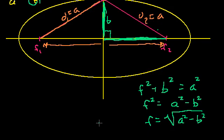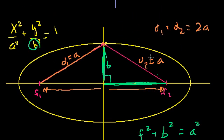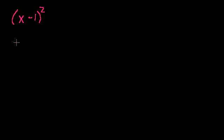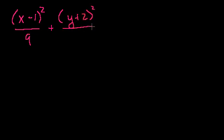That's neat and clean — you just take the difference of these two numbers and take the square root to get the focal distance. Now let's apply this to a real problem. Suppose we're given the equation x minus 1 squared over 9 plus y plus 2 squared over 4 equals 1, and we need to find the focal length or the coordinates of the foci.